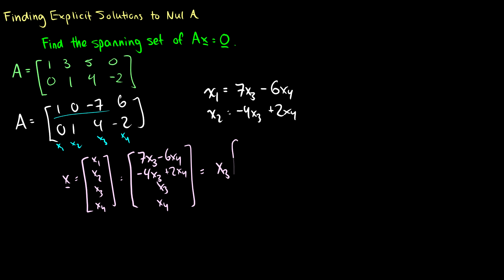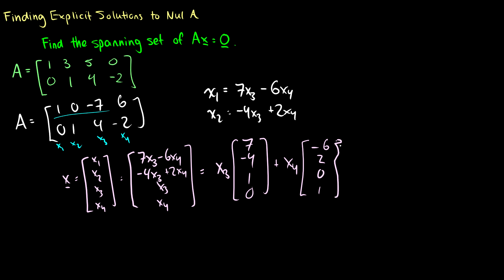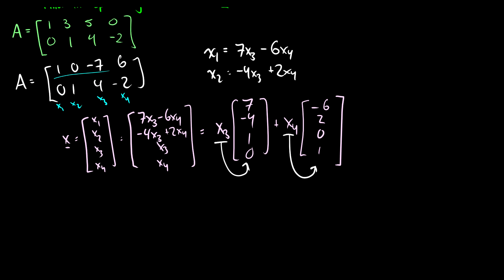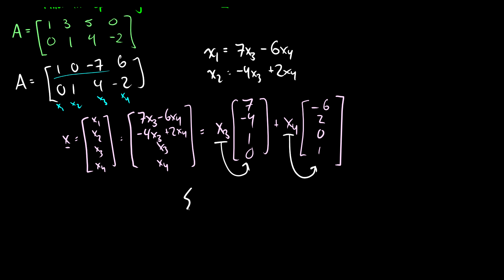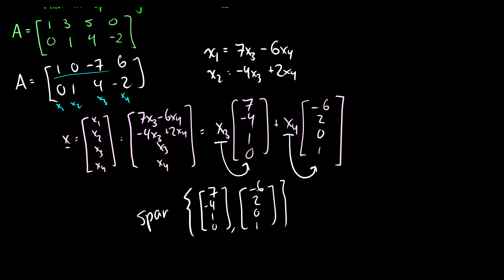Our solution vector x = (x1, x2, x3, x4) can be rewritten as x3 * (7, -4, 1, 0) + x4 * (-6, 2, 0, 1). So the spanning set consists of the two vectors (7, -4, 1, 0) and (-6, 2, 0, 1).